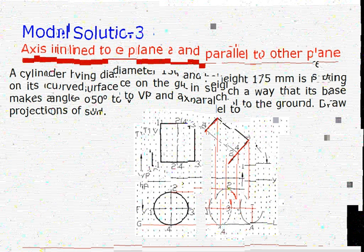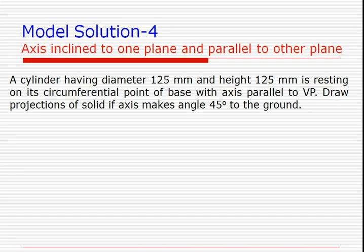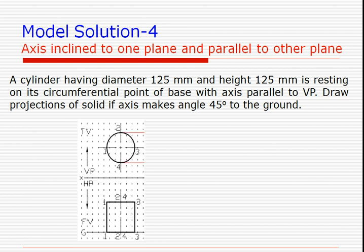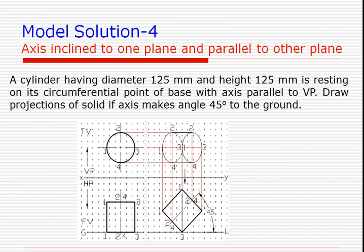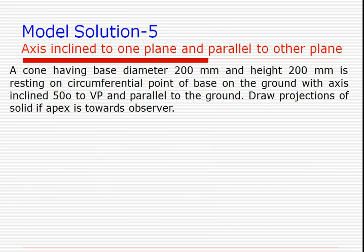The next example is very similar to problems 1 and 2, only here we have a cylinder. In the initial position the axis is perpendicular to the VP. Finally the axis has to be 45 degrees to the ground, so in the next step we make the front view 45 degrees and obtain the top view.